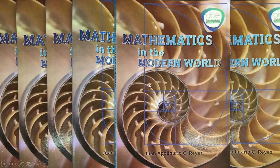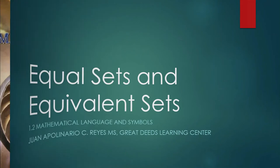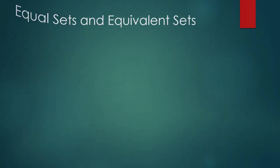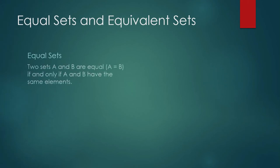Mathematics in the Modern World. Equal Sets and Equivalent Sets. When are two sets equal? When are two sets equivalent? Two sets A and B are equal if and only if A and B have the same elements.